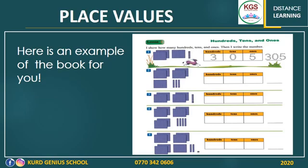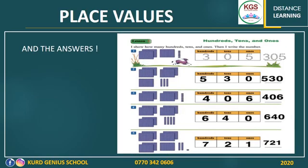Now it's your turn to do numbers two, three, four, and five. Please do it yourself and I will show you the results. Okay, number two. How many ones do you see? Nothing — put zero in the ones place. How many groups of tens do you see? One, two, three — put three in the tens place. What about the hundreds? One, two, three, four, and five — there are five groups of hundreds. Put five in the hundreds place. So this is number 530.